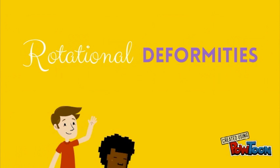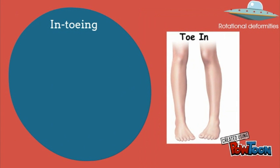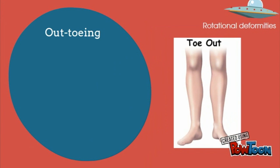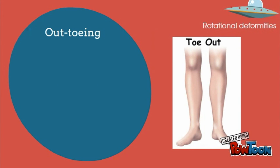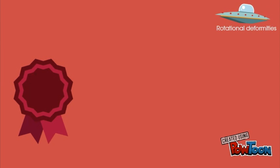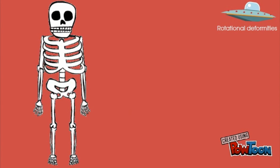Rotational deformities. In-toeing is when the feet or toes point towards the midline during gait. It may originate in the foot as metatarsus adductus, in the lower limb as internal tibial torsion, or in the hip as internal femoral anteversion. Out-toeing is when the feet or toes point away from the midline during gait; it may be due to external tibial torsion or external rotation of the hip. Both in-toeing and out-toeing are common and tend to resolve spontaneously, and have a wide range of normal often related to ligamentous laxity. Tests are done to elicit the origin of the deformity — whether it is in the foot, tibia, or femur.